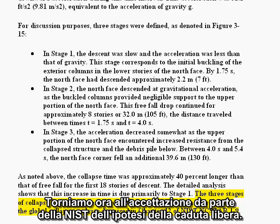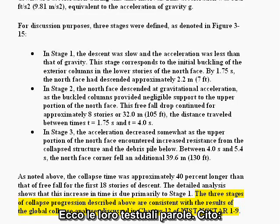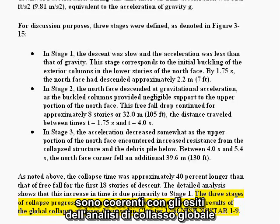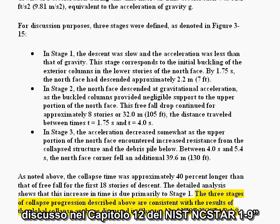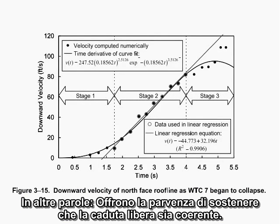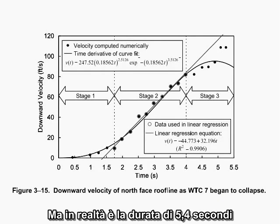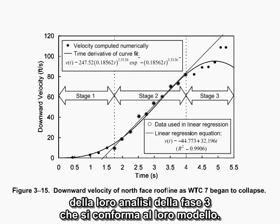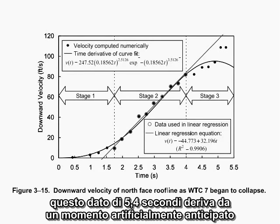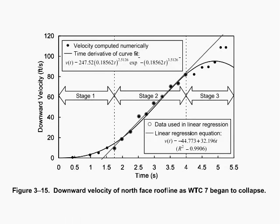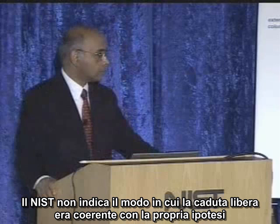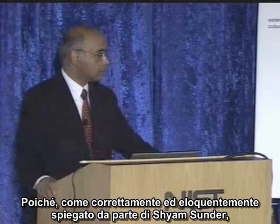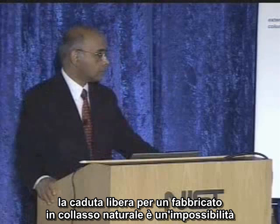Let's come back to NIST's acceptance of freefall. Here is their exact wording: "The three stages of collapse progression described above are consistent with the results of the global collapse analysis discussed in Chapter 12 of NIST NC Star 1-9." In other words, they're giving the appearance of claiming freefall is okay, but actually it's the 5.4 second duration of their three-stage analysis that matches their model. We saw in Part 2 of this video series that the 5.4 seconds depends on an artificially early start time, which has no valid observational basis. Without the 5.4 second fig leaf, they are left with freefall and nothing more. NIST does not show how freefall is consistent with their hypothesis because, as Shyam Sundar has correctly explained, freefall for a naturally collapsing building is impossible.